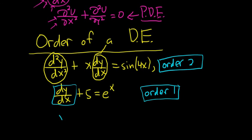Say we had y triple prime plus y prime equals sine x. In this case, the order would be 3 because the highest derivative is a third derivative.